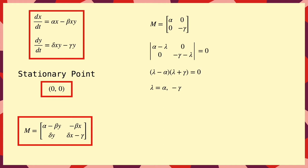The eigenvalues are alpha and minus gamma, and since both alpha and gamma are positive, we have one positive eigenvalue and one negative one, which means this stationary point is a saddle.